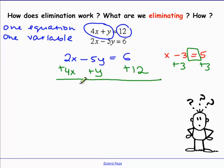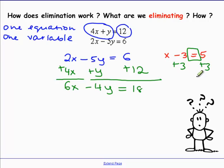Let's see what happened. We get 6x's and negative 4y's, equal to 18. Well, it's actually not going to get us any closer to our solution because we still have two variables. So we're going to rethink this a little bit.